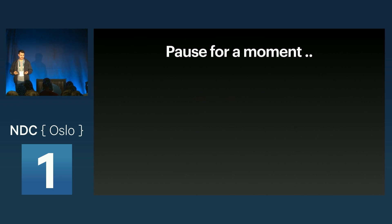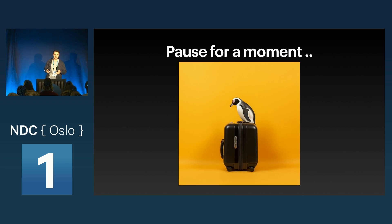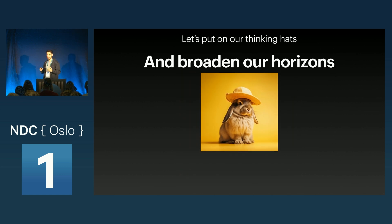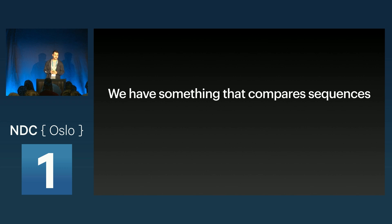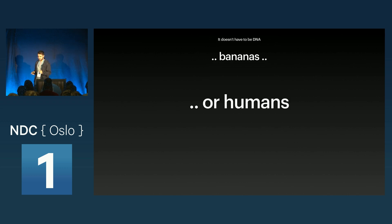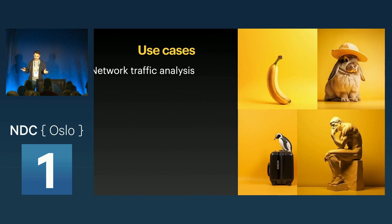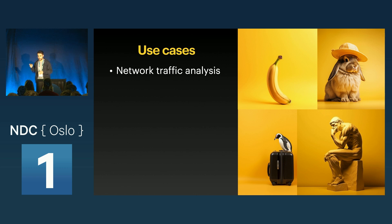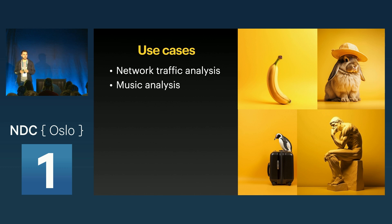Let's pause and put on our thinking hats to broaden our horizons. What we have here is something that compares sequences, but it doesn't necessarily have to be DNA, bananas, or humans. It could be network traffic — you could interpret it as a sequence and use it to discover unusual patterns indicating something that needs attention, like a cyber attack. Or you could use it in music analysis, for example to do motif discovery or compare different compositions.